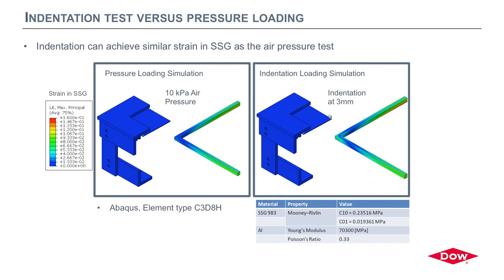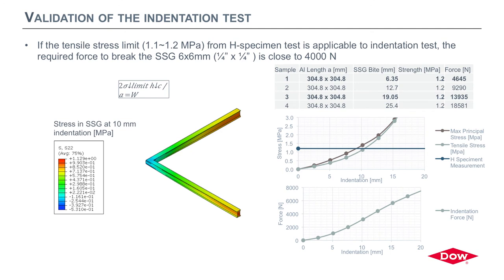We verified that this indentation test provides the same levels of strain as expected with pressure loading. Using Abaqus with a Mooney-Rivlin material model for the 983 silicone, we can see that both cases reach similar strain values — so that was validated. We can also assume that at this scale, the failure strength is the same as for an H-piece. Knowing that 983 fails at 1.1–1.2 MPa, we can calculate how much force is needed depending on the joint bite dimension, and we are in a range of 24,000 newtons, which our system can reach.